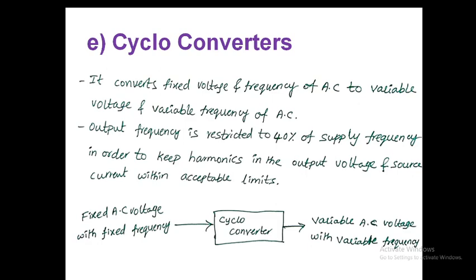The next type is cycloconverters, used to convert fixed AC voltage and frequency into variable AC voltage and variable frequency. The output frequency is restricted to 40% of the supply frequency in order to keep harmonics in the output voltage and source current within acceptable limits.